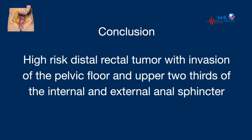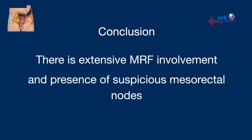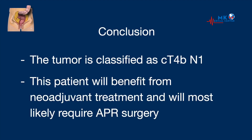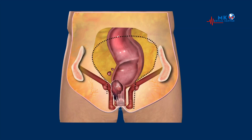Conclusion. This is a high-risk distal rectal tumor with invasion of the pelvic floor and about two-thirds of the internal and external sphincter. There is extensive involvement of the mesorectal fascia and there are a couple of mesorectal nodes which are very suspicious, even located in the high mesorectum. This tumor is classified as clinical T4b because of the invasion of the pelvic floor muscles, and N1 because of the lymphadenopathy. This patient will benefit from long-term chemoradiation and will most likely require abdominal perineal resection, which is a combination of total mesorectal excision with excision of the anal sphincter.